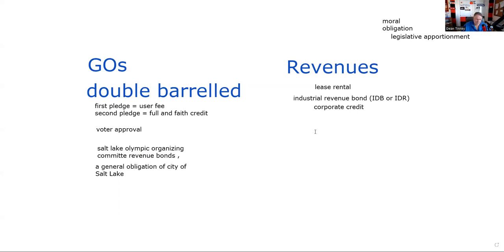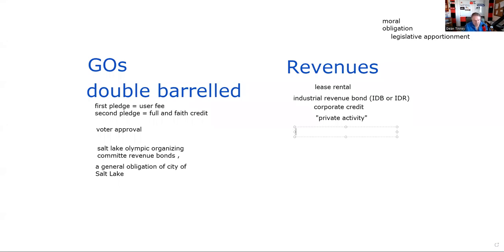Gilroy, California built a motorcycle manufacturing facility. Gilroy is double A and the motorcycle company is not rated, so 'not rated' goes on the bonds. That's our first test question. The second test question is: the IRS calls this a private activity bond. The major beneficiary of these bonds is not the city of Gilroy or Denver or Chicago — it's Boeing, it's Schwab, it's the motorcycle company. And a stadium also falls into this category.